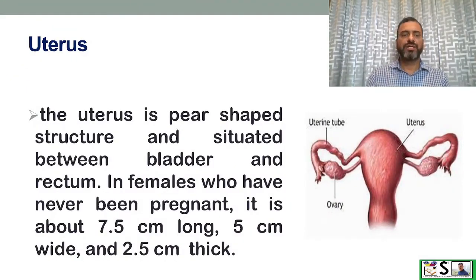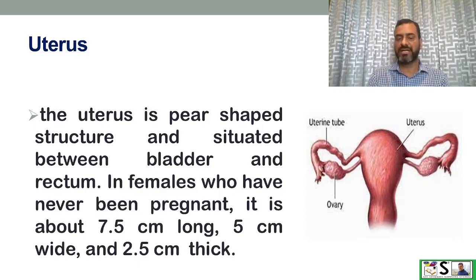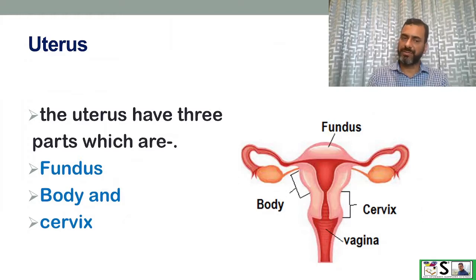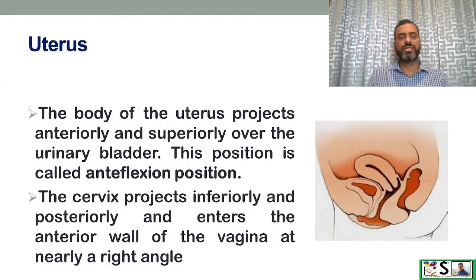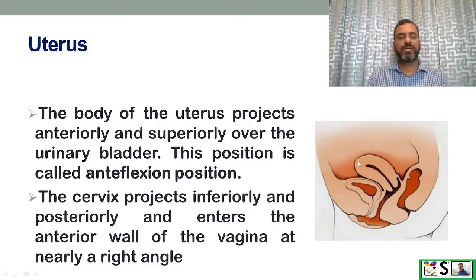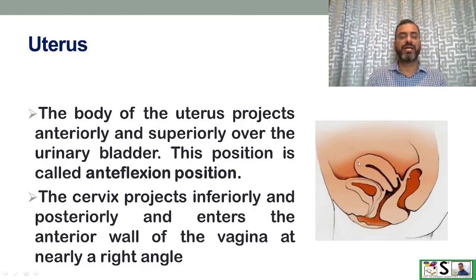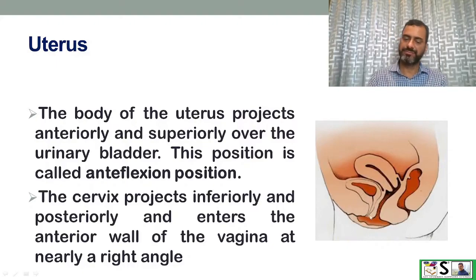The uterus is a pear-shaped structure situated between the bladder and rectum. In a woman who has never been pregnant, it measures 7.5 cm in length, 5 cm in width, and 2.5 cm in thickness. The uterus has three parts: the fundus (upper part), the body (middle part), and the cervix (lower part). The body projects anteriorly and superiorly over the urinary bladder — this is called the anteflexion position. The cervix projects inferiorly and posteriorly, entering the anterior wall of the vagina at nearly a right angle.